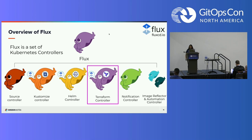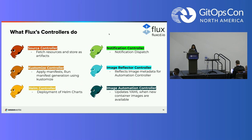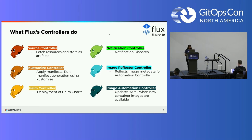Flux is a set of Kubernetes controllers. A controller handles the lifecycle of objects in Kubernetes — like what should be done when an object is created, updated, or deleted. The main Flux controllers: the source controller fetches manifests and stores them as artifacts so that the kustomize controller can then apply the manifests — it runs manifest generation using Kustomize. The kustomize controller is named thusly because it's using Kustomization in the background.